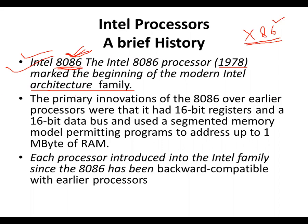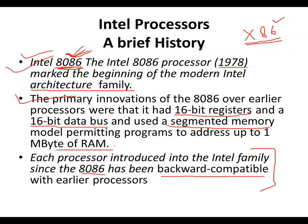The primary innovations of the 8086 over earlier processors were its 16-bit registers and 16-bit data bus, and it used a segmented memory model permitting programs to address up to 1 megabyte of RAM. Each processor introduced into the Intel family since the 8086 has been backward compatible with earlier processors, including Pentium, dual-core, and quad-core processors.